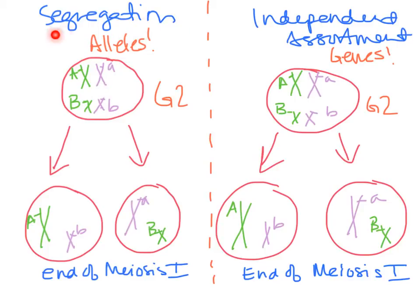That's the law of segregation — how alleles come apart. They do not stay together in the gametes. The law of independent assortment talks about genes not staying together. It's the same process: meiosis I. This chromosome came this way, purple chromosome over here, green chromosome, purple chromosome.